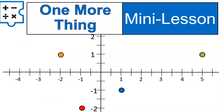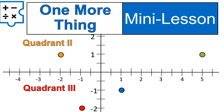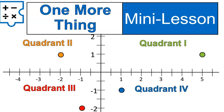Now let's talk about one more thing and then we'll finish up this lesson. Inside of the coordinate plane there are four sections called quadrants — those quarters have special names. Quadrant 1 is the green section: everything to the right of the y-axis and up from the x-axis. Quadrant 2 is to the left of the y-axis and above the x-axis. Quadrant 3 is in the bottom left-hand corner. Quadrant 4 is in the bottom right corner.